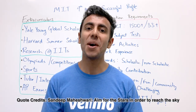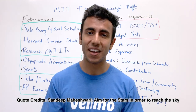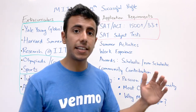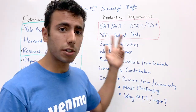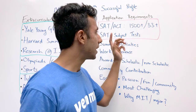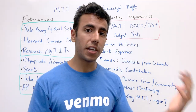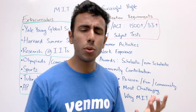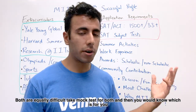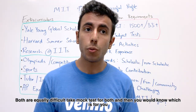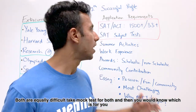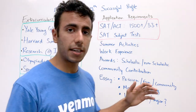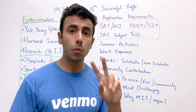Starting with scores: the first most important thing is your SAT or ACT score. You have to choose one. If you're taking the SAT, aim for 1500 plus. If you're taking the ACT, aim for 33 plus. Both are equally difficult, so take mock tests for both and go with whichever you're more comfortable with — and take it with writing.